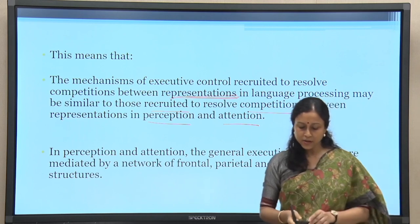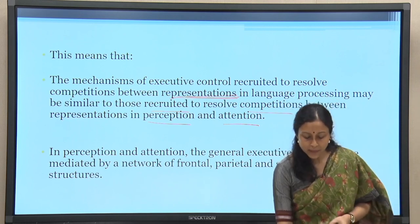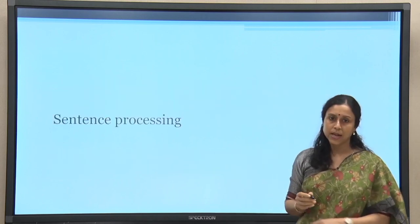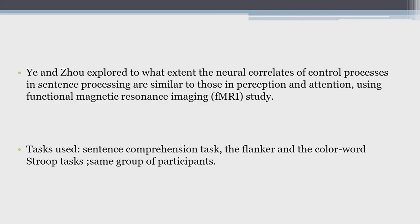In perception and attention, the general cognitive executive functions are mediated by a network of frontal, parietal, and subcortical structures, which we have already seen. This area of research is vast and very rich; there are a number of groups working on these nuances in each of these domains. We will discuss only some representative experiments, but I will include more references for you to read. One of the very well-cited studies looked at whether there is a similarity in conflict resolution in a linguistic scenario with respect to a non-linguistic scenario.